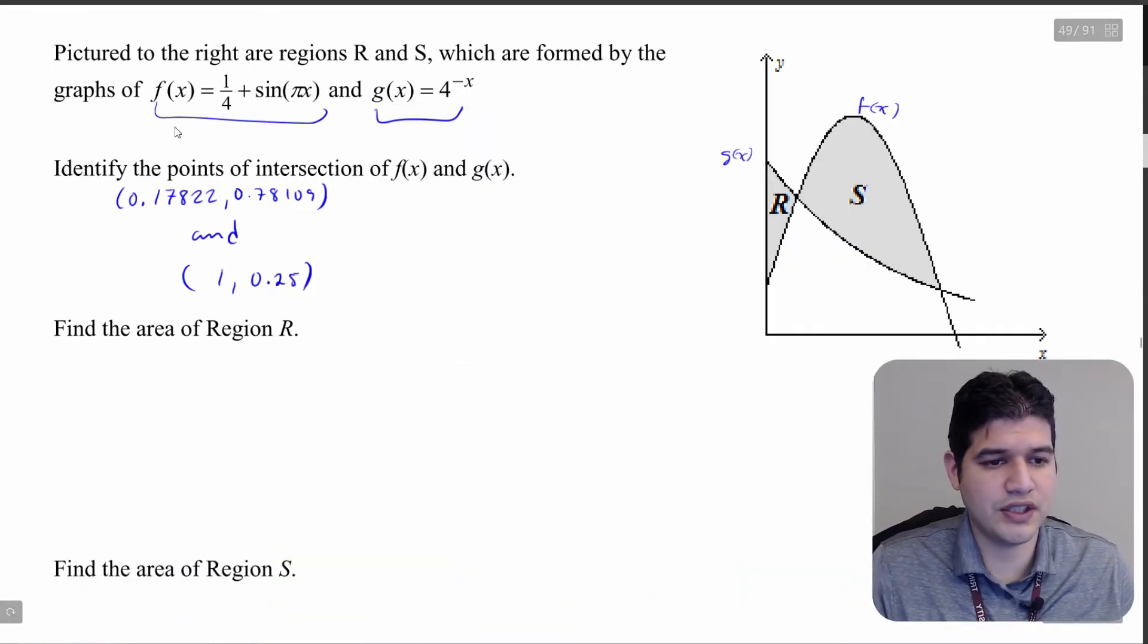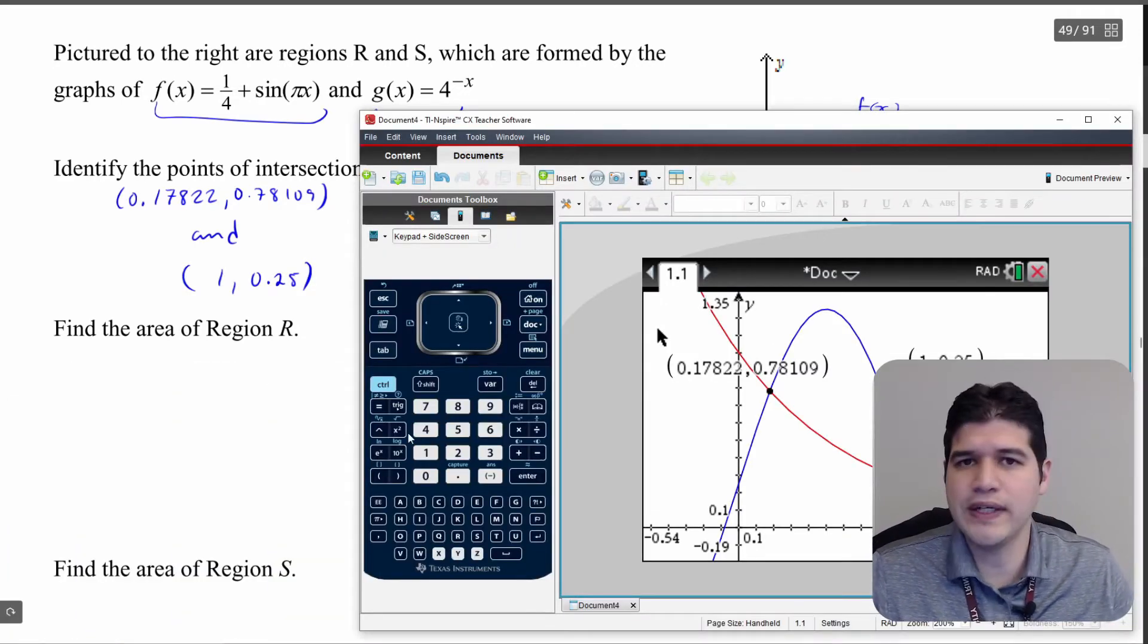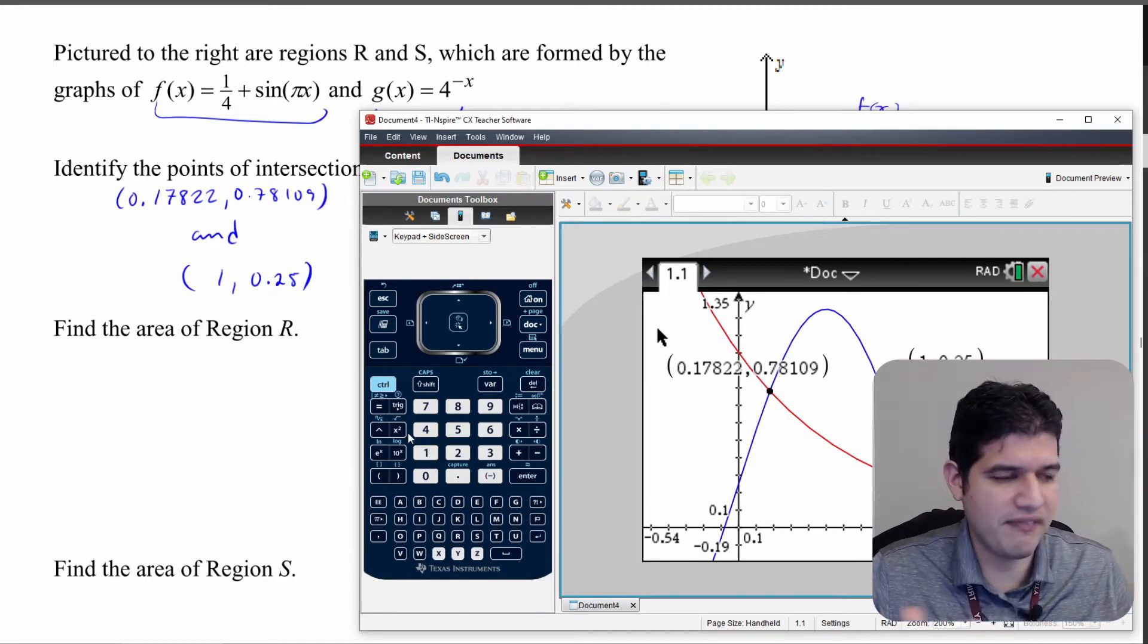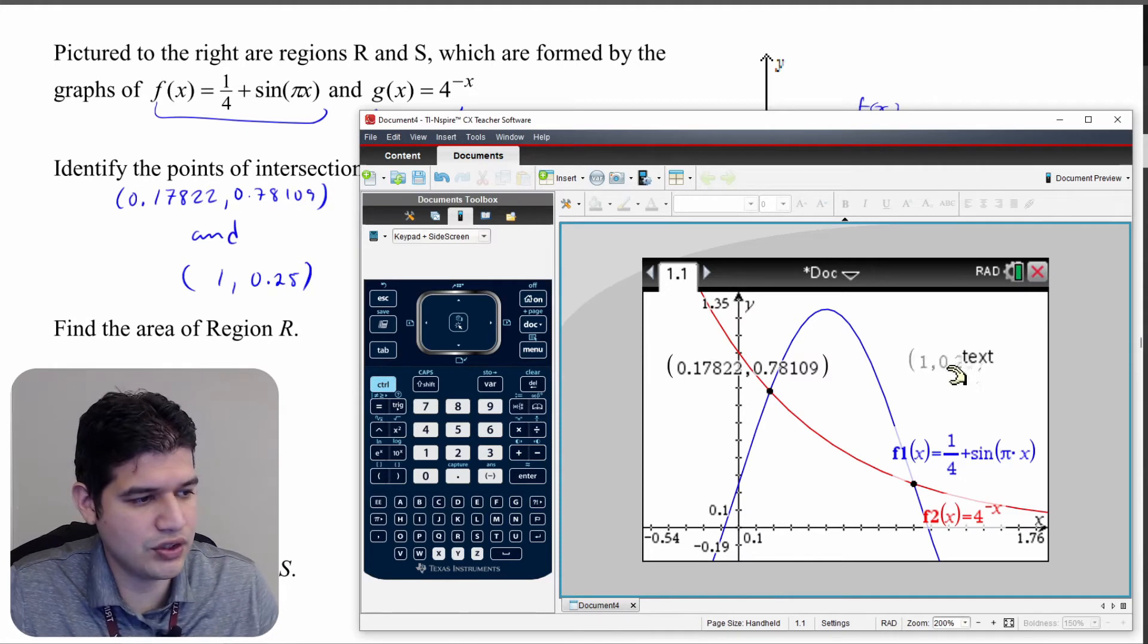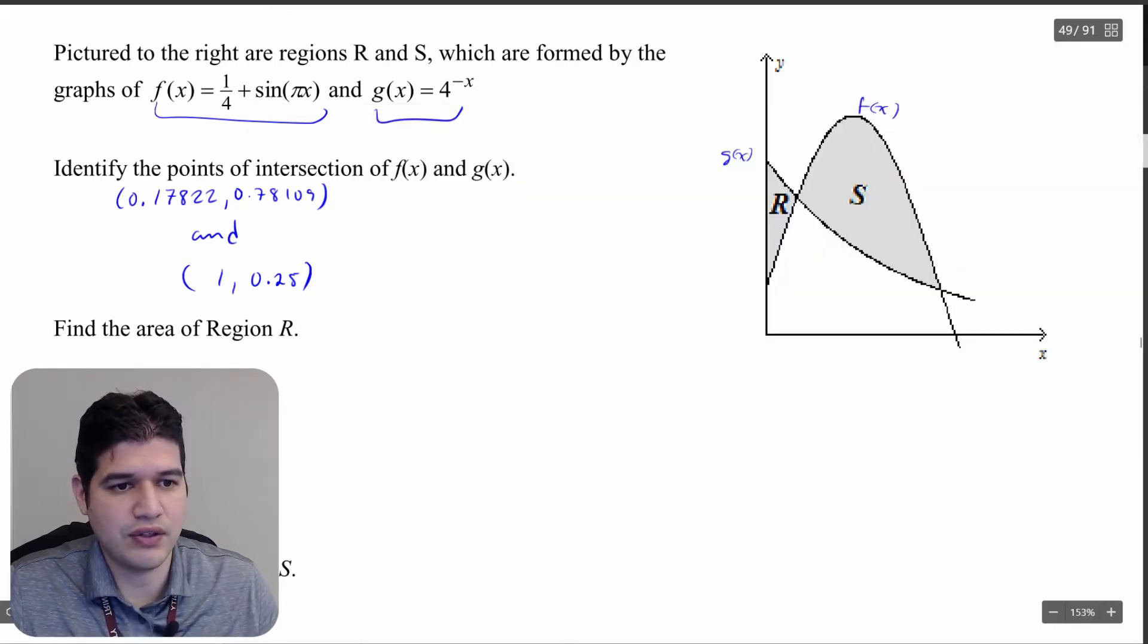All right so after finding the intersection point, I did have to change the window a lot in order to work with this but I found a nice little window fit that helped me work with this graph. I got these two intersection points which I wrote down over here on the side.